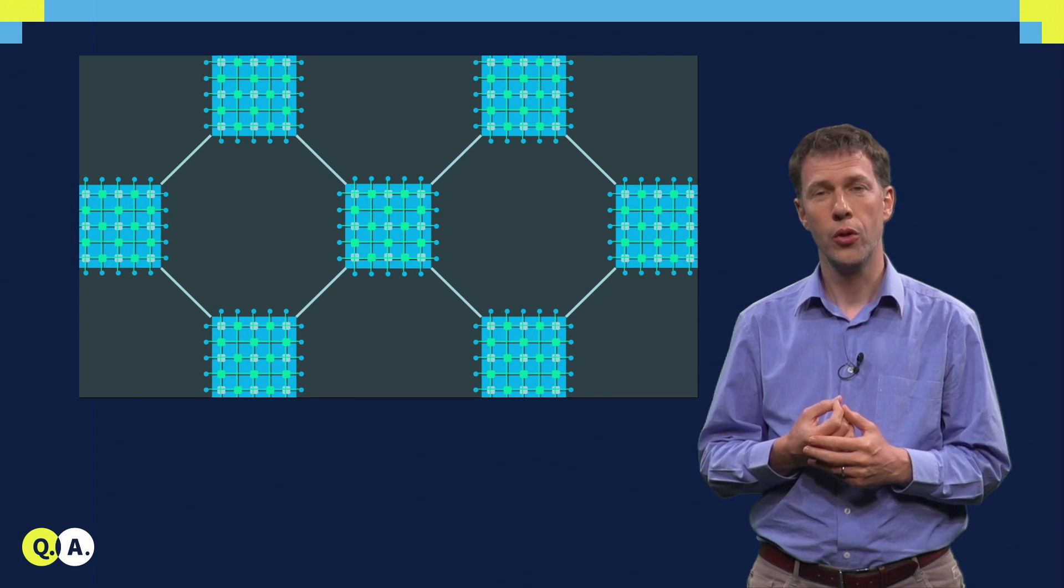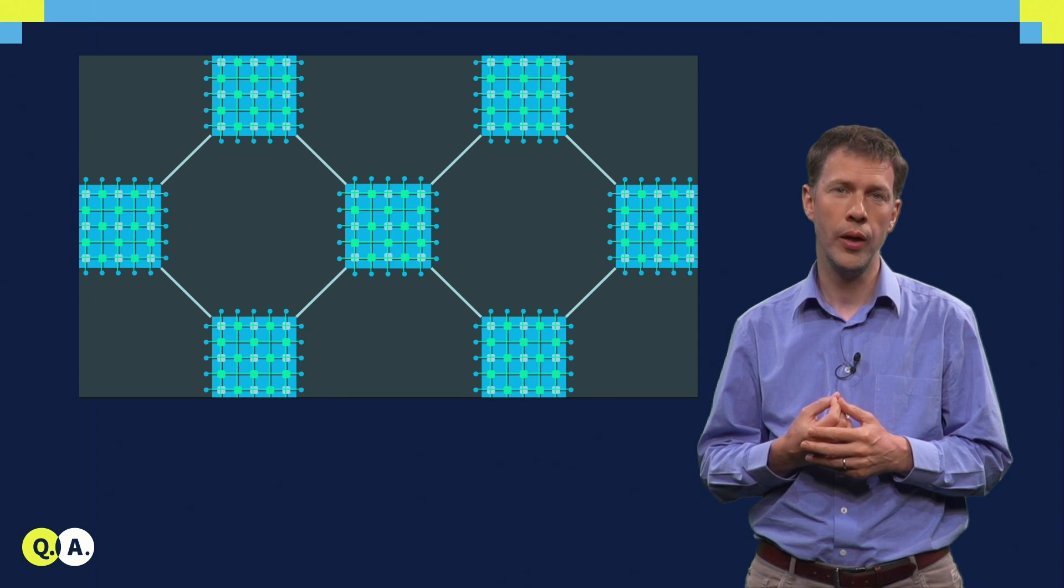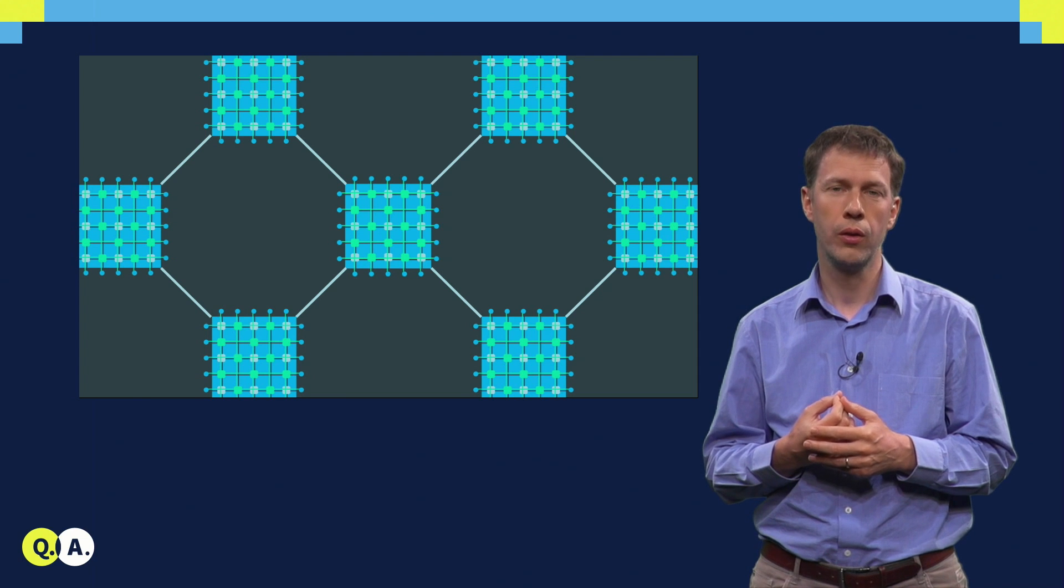With this approach, we envisioned that perhaps something like 1024 qubits can be integrated into a single array, no larger than 30 by 30 micrometers. To go beyond that, we envisioned true quantum integrated circuits.